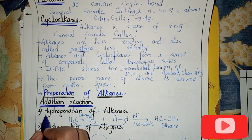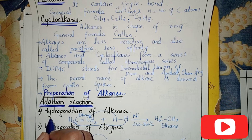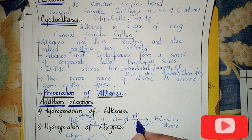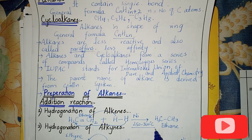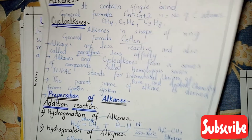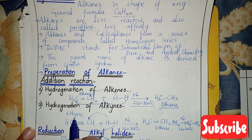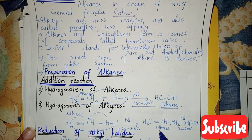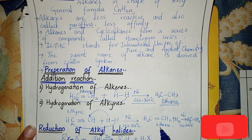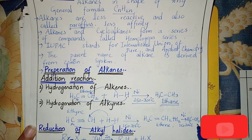Alkenes combine with hydrogen — hydrogenation — in the presence of nickel at a temperature of 250 to 300 degrees Celsius. Whenever we do hydrogenation, we use nickel or platinum and the temperature will be 250 to 300 degrees C. This gives us alkane. Similarly, hydrogenation of alkynes — ethyne or acetylene — with hydrogen added in the presence of nickel at 250 to 300 degrees C gives ethane, and on further hydrogenation gives alkane.